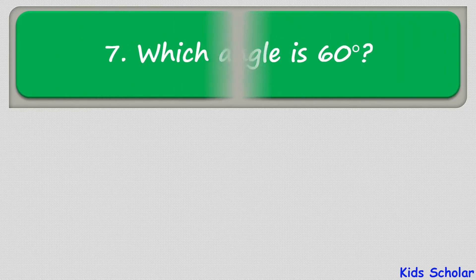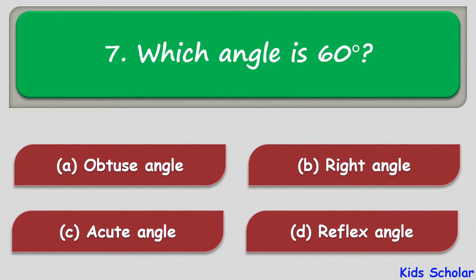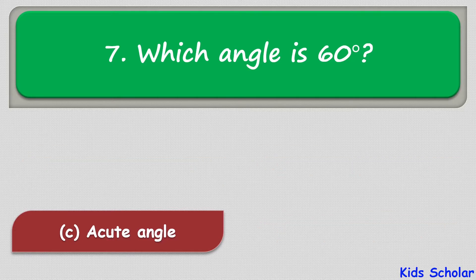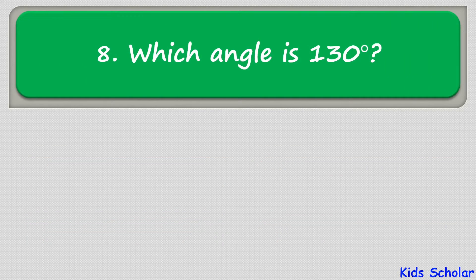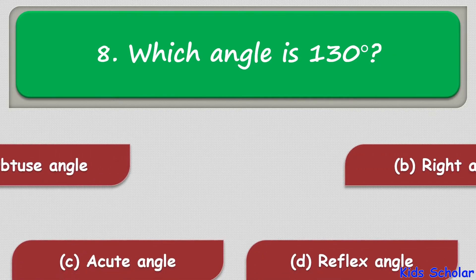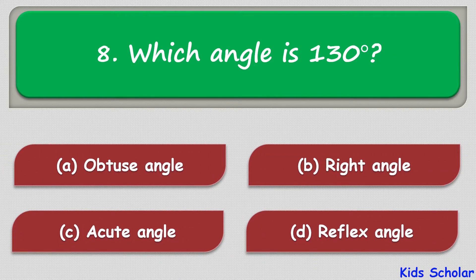The next question is: which type of angle is 60 degrees? The options are obtuse angle, right angle, acute angle, and reflex angle. The correct answer is acute angle.